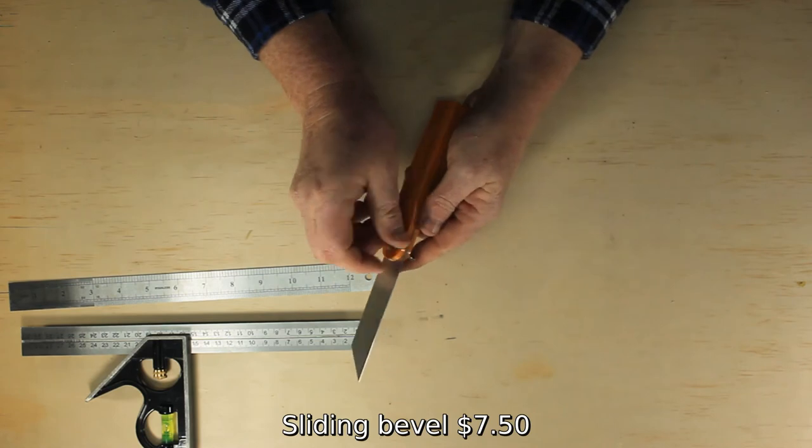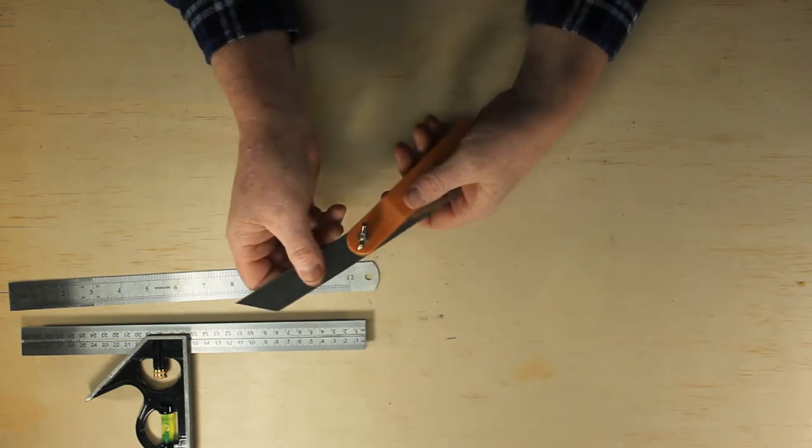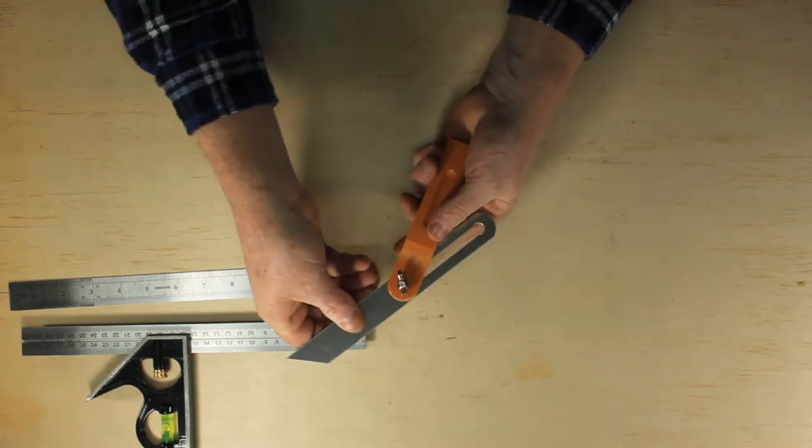The sliding bevel is used for measuring and marking any angle that isn't exactly 90 or 45 degrees.